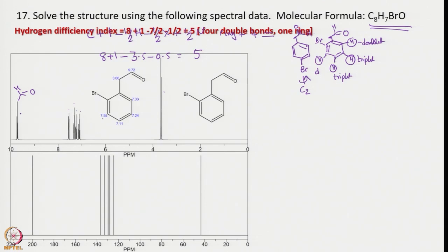The signal at 7.33 corresponds to aromatic protons showing triplets. The signals slightly higher in chemical shift are doublets next to the bromine. At 3.66 we see a doublet, and one proton shows a triplet due to coupling with its two neighbors. This is how one can do a very nice interpretation of the spectrum.